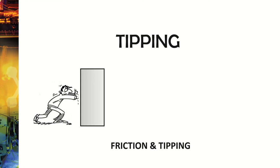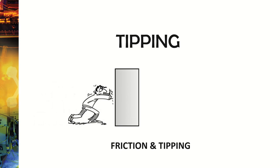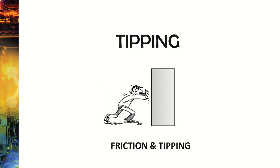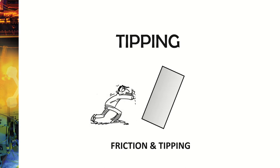All right, everyone, we're going to now talk about the last and final lecture, which is friction and tipping. What we've already discussed is this guy over here and how when he pushes a box, friction is involved in trying to prevent his ability to move that box to the right. But what we're going to also talk about now is that if he pushes the box, not only could it slide, but it could also tip.